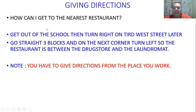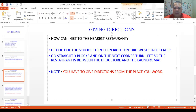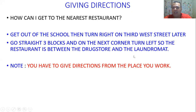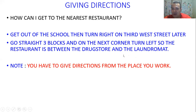The second scenario: how can I get to the nearest restaurant? I'm giving you directions from the place I work. Excuse me, how can I get to the nearest restaurant? Get out of the school, then turn right on Third West Street. Later, go straight three blocks. And on the next corner, turn left. The restaurant is between the drugstore and the laundromat. That's how you get to the nearest restaurant from the place I work.